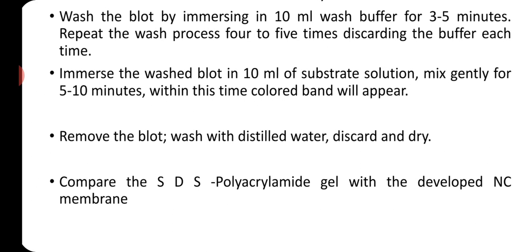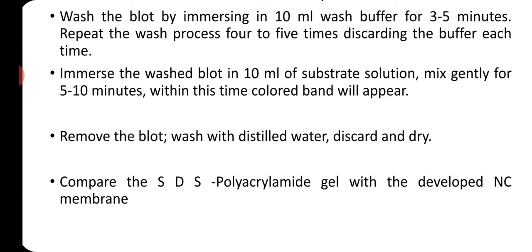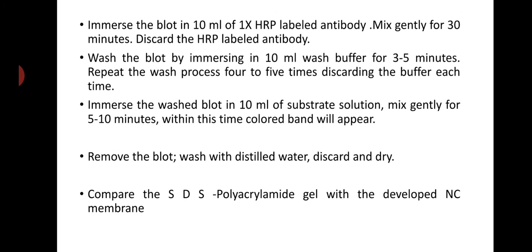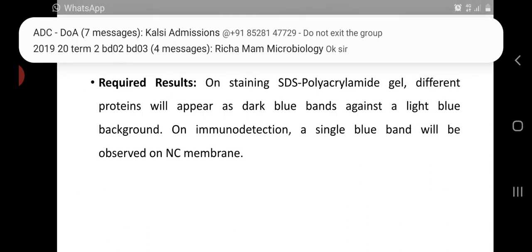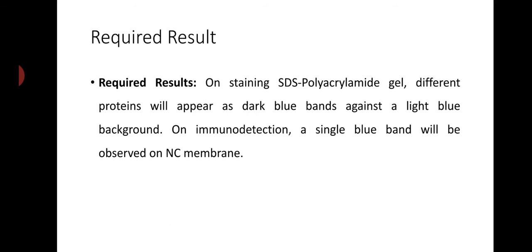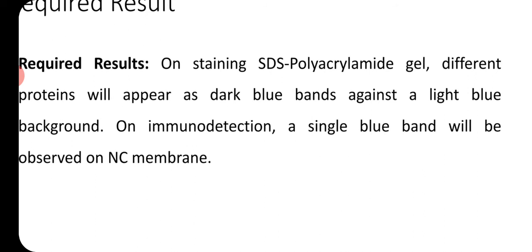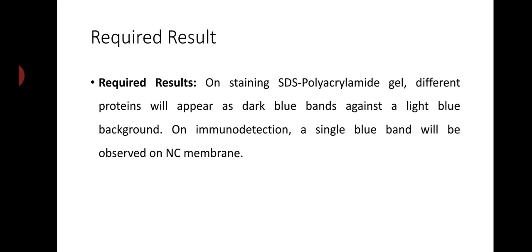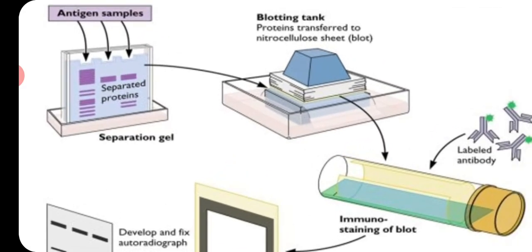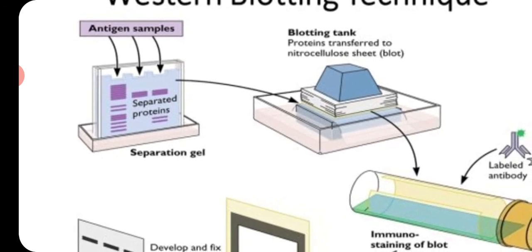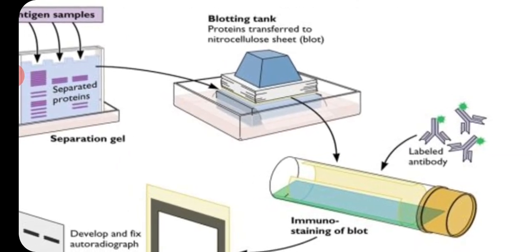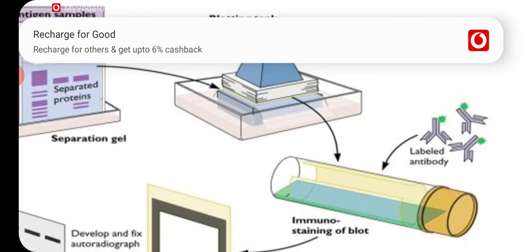Compare your SDS PAGE gel with the developed nitrocellulose membrane. If the band has been transferred from SDS PAGE to the sheet and if binding of the primary antibody took place, you will observe a band on the nitrocellulose sheet. The expected result is a single blue band appearing on the nitrocellulose membrane after immunodetection. In pictures: first is the SDS PAGE where proteins are separated, then the blotting apparatus where transfer takes place — this physical or mechanical method transfers via capillary action.